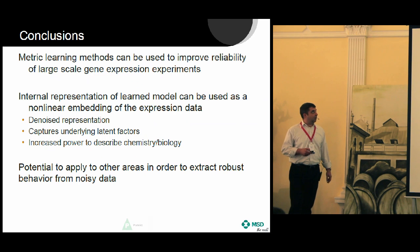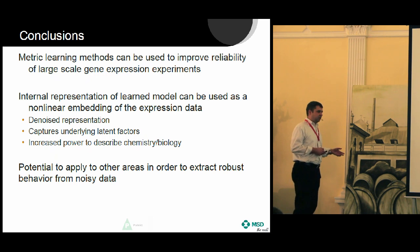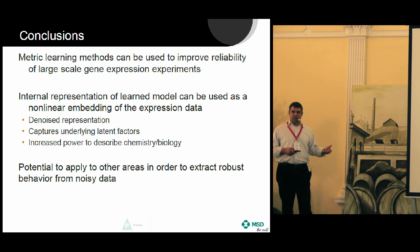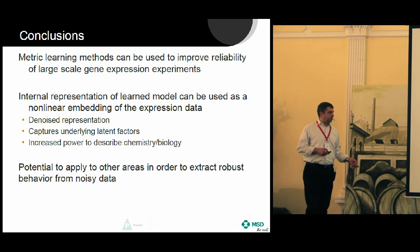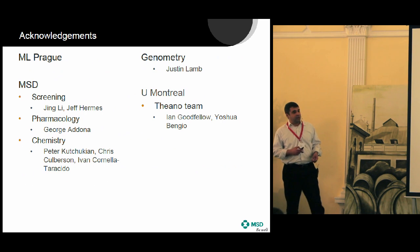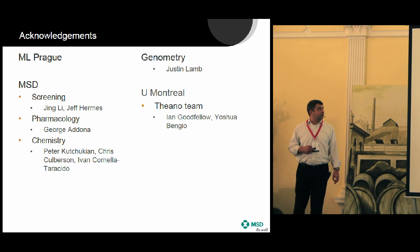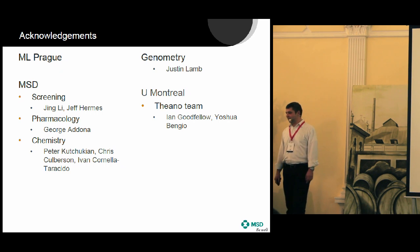In summary, we have used metric learning to improve the reliability of data from large-scale gene expression experiments by using the internal representation of the metric learning model. We've denoised the data — alternatively, extracted latent factors — and increased the ability to pull out things related to underlying chemistry and biology. There's potential to apply this approach to other areas where data isn't perfect and there might be noise. I want to thank the organizers, acknowledge my collaborators, as well as Genometry, and give a shout-out for open source software — MSD doesn't build machine learning toolkits, we take advantage of those available in the ecosystem.